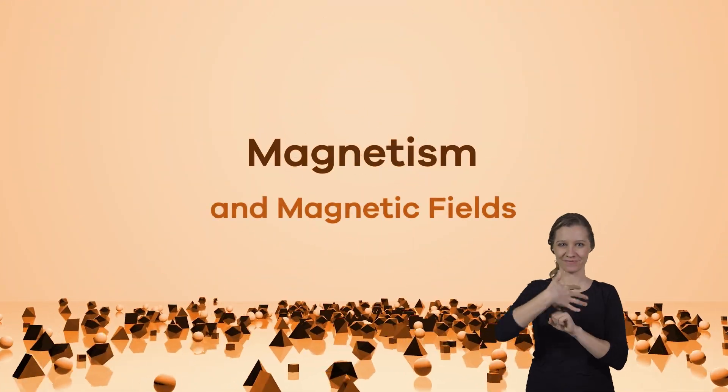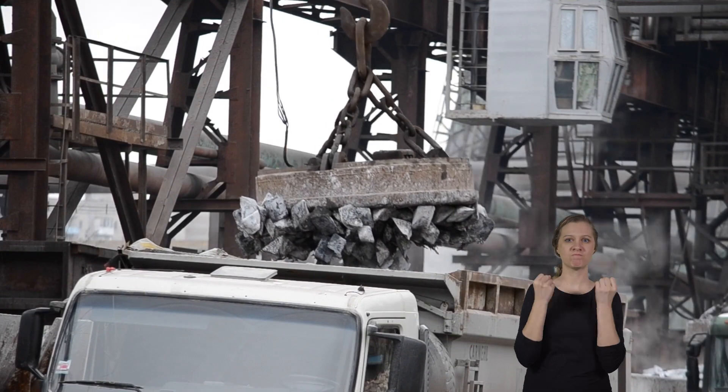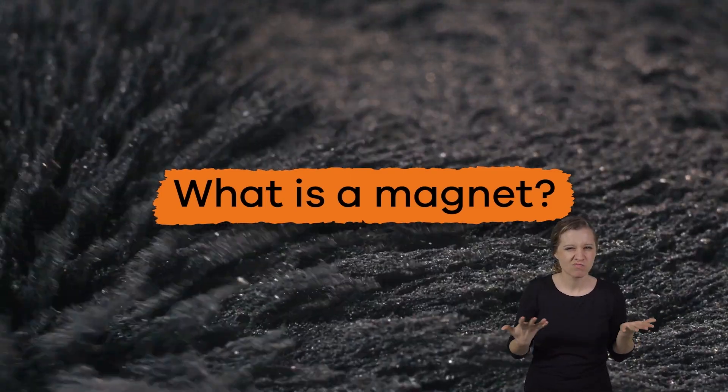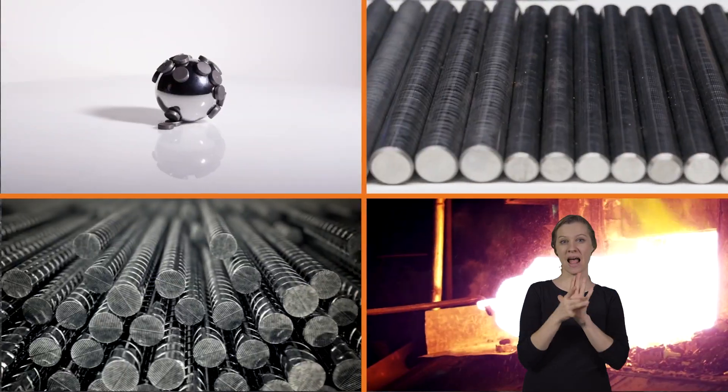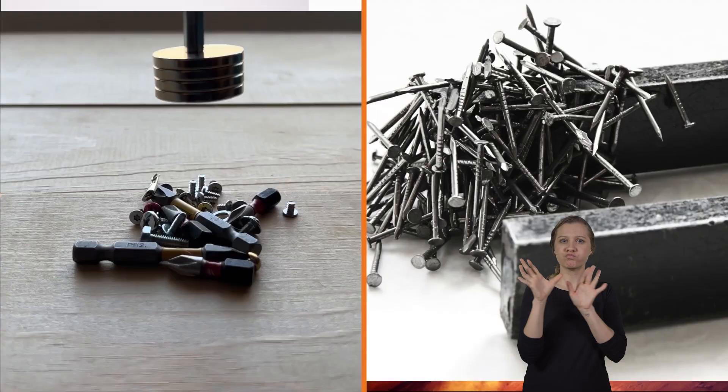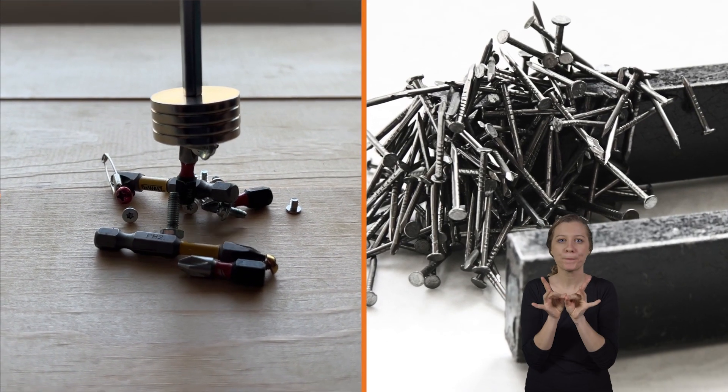Magnetism and magnetic fields. Magnets have many uses and the science behind them is pretty fascinating. What exactly is a magnet? Magnets are pieces of metal, usually iron or steel, that are able to attract certain kinds of other metals.